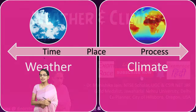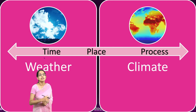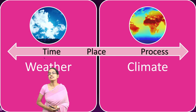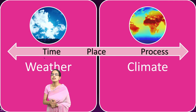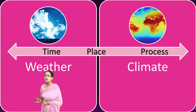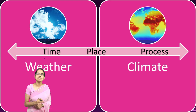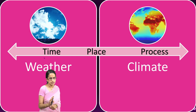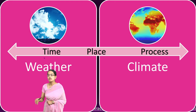We have often heard that there are weather forecasts, but we never heard the term climate forecast. In this session, we would understand the difference between weather and climate. To be very precise, this difference can be understood on three parameters: time, place, and process.